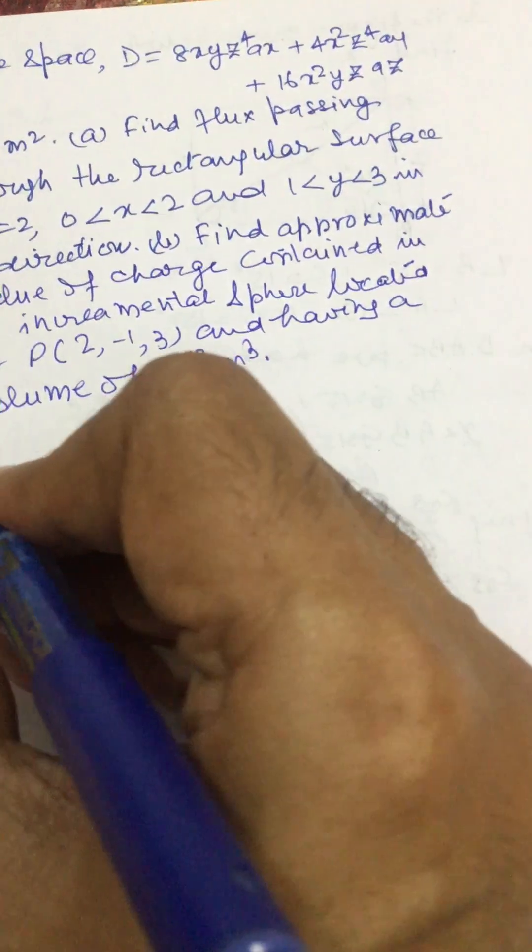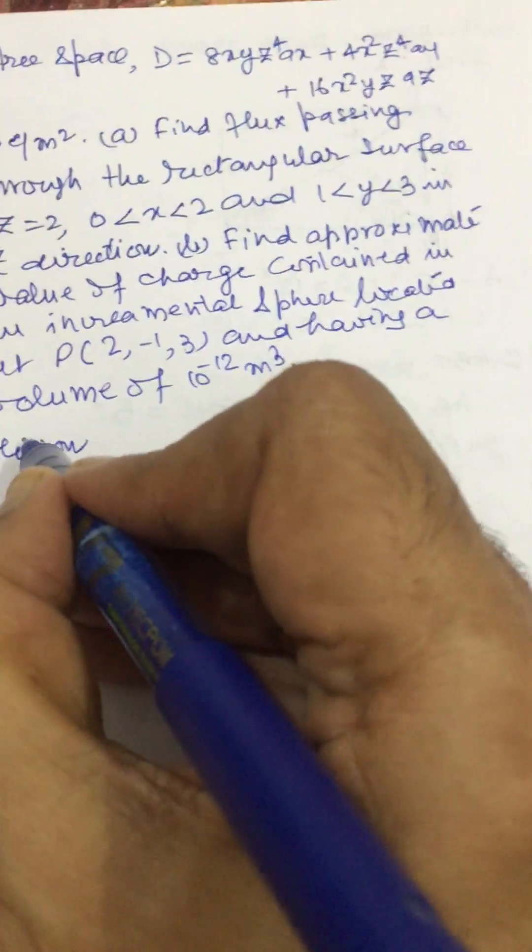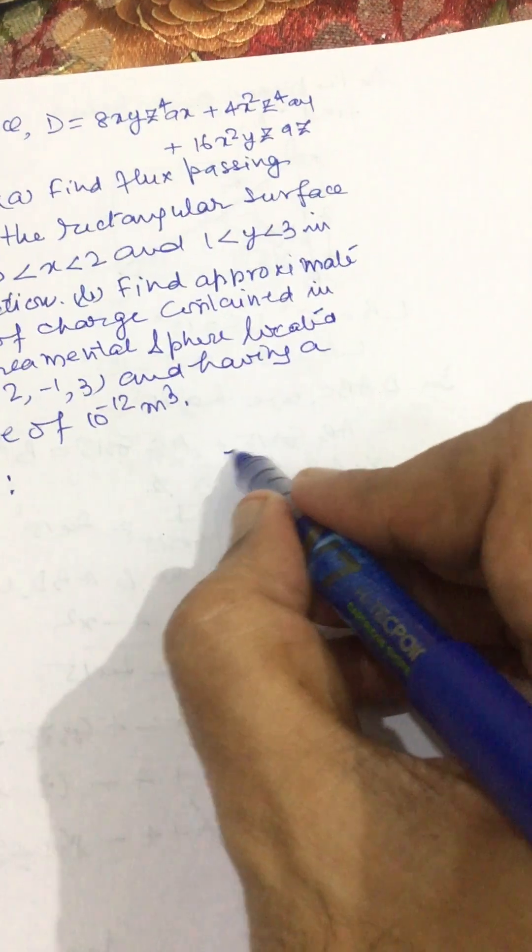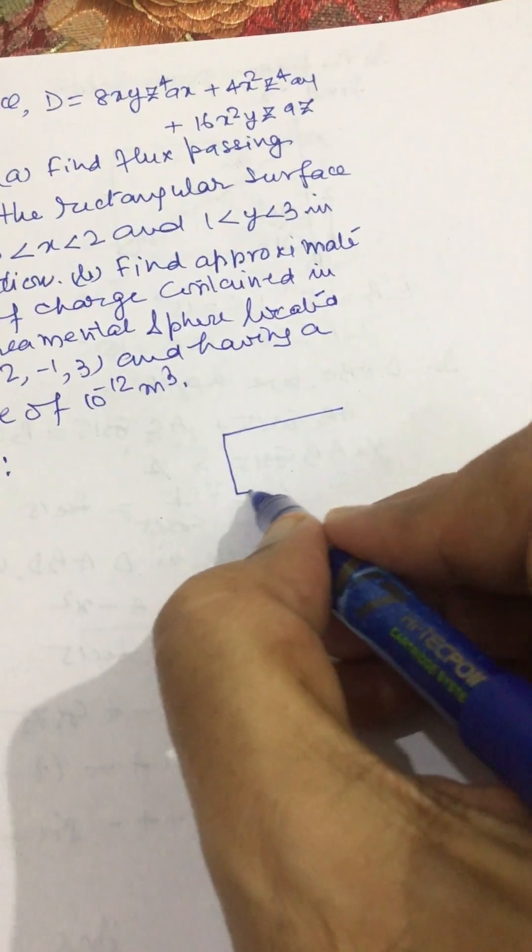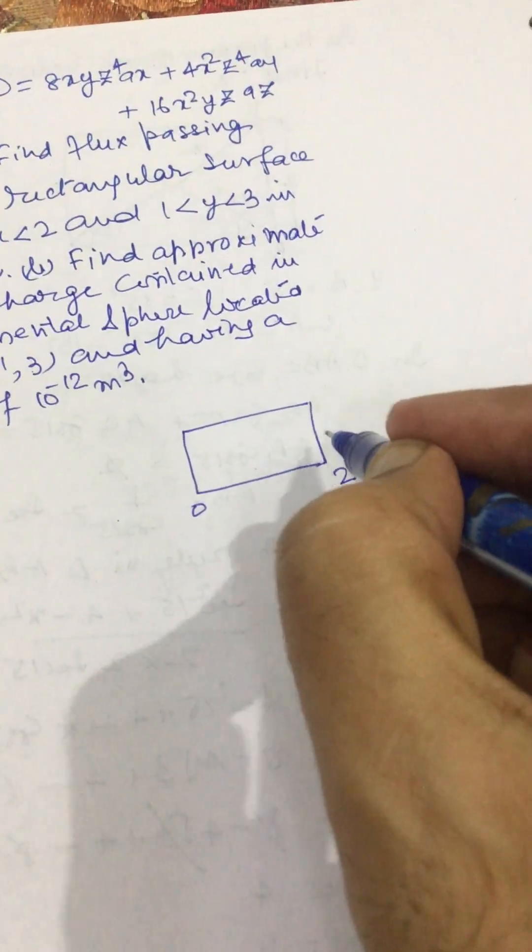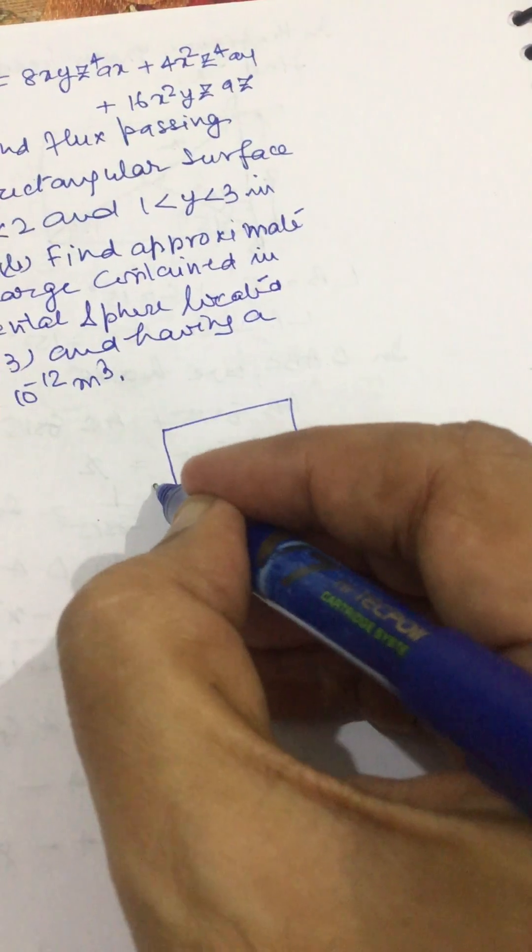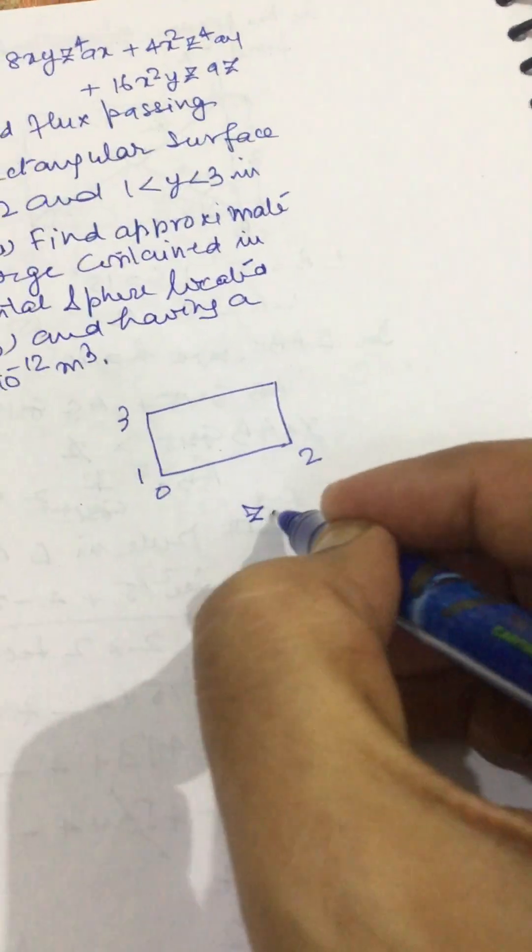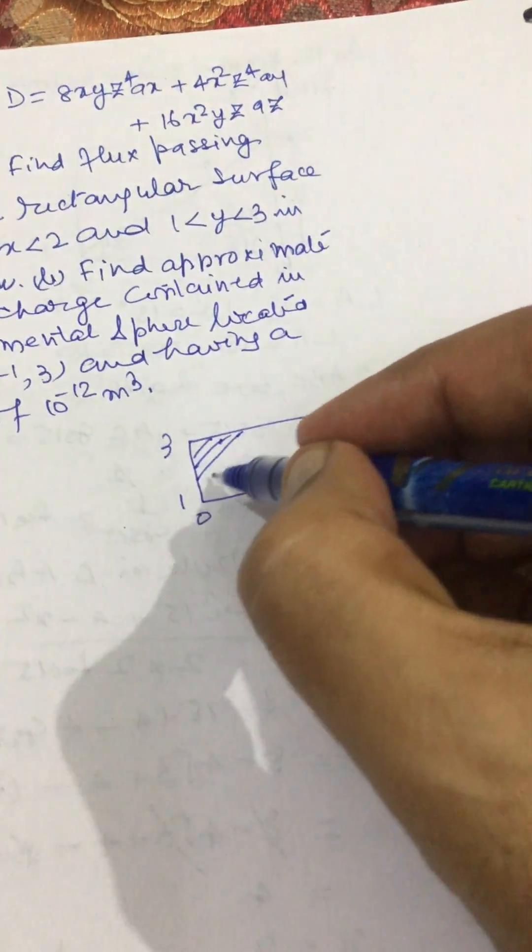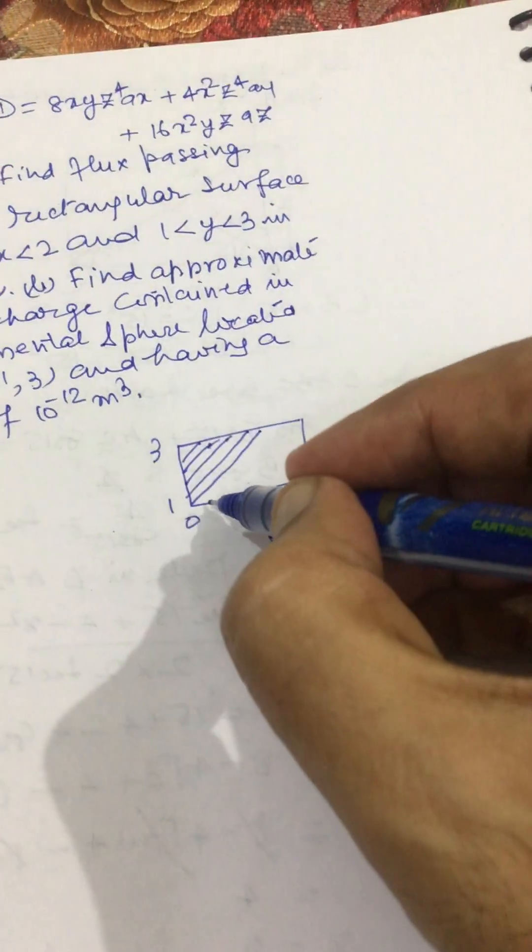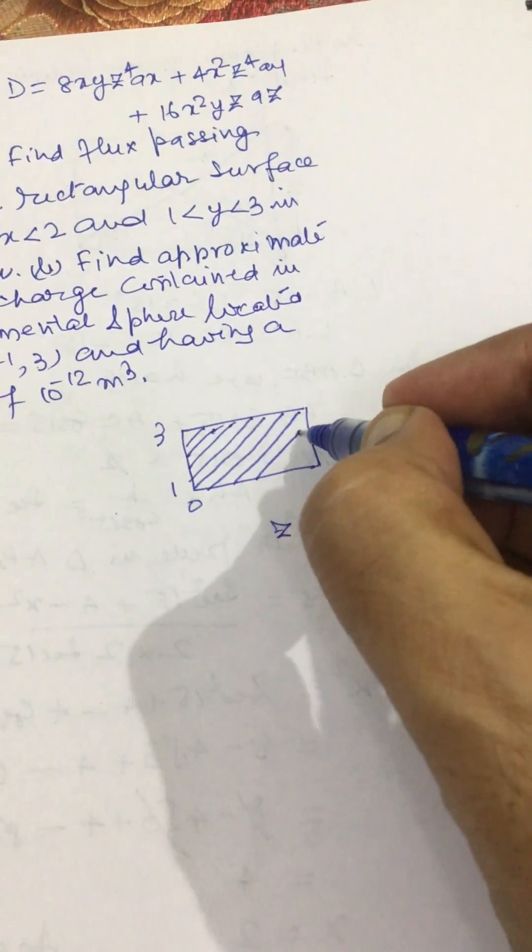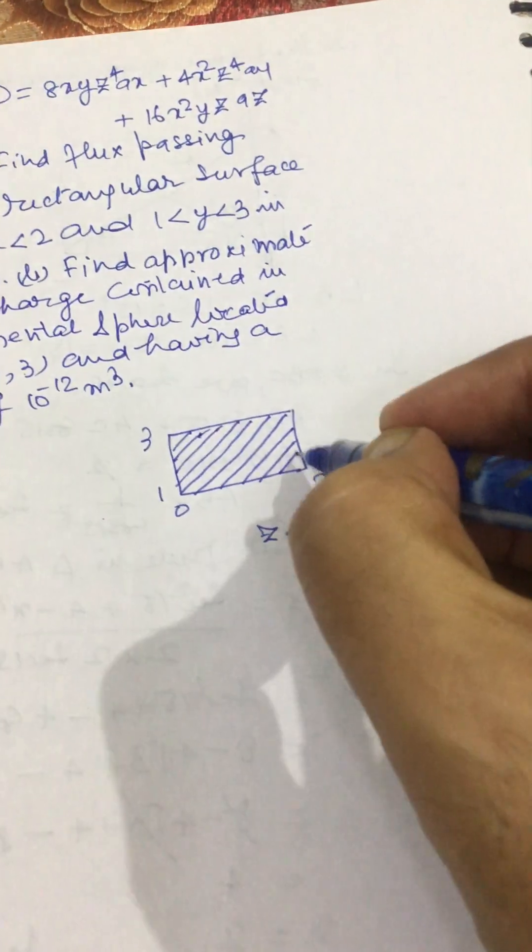We will proceed like this to solve this question. Let us say this is our rectangular space, this is 0 to 2, y is 1 to 3, and z equals 2. We have to find out flux passing through this rectangular shape. This is in the xy plane.